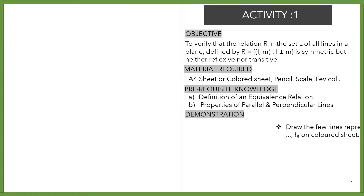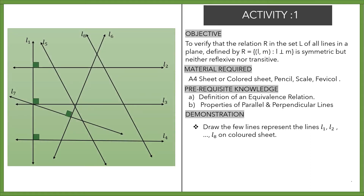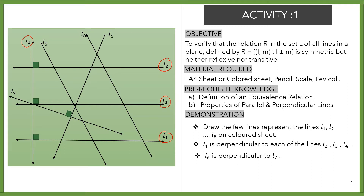Now you have to draw a few lines — L1, L2, L3, and so on up to L8 — on a colored sheet. On the left-hand side of the sheet, you can see lines which are parallel, perpendicular, and intersecting. L1 is perpendicular to each of the lines L2, L3, and L4. Also, L6 is perpendicular to L7. Next, L2 is parallel to L3, and L3 is parallel to L4.